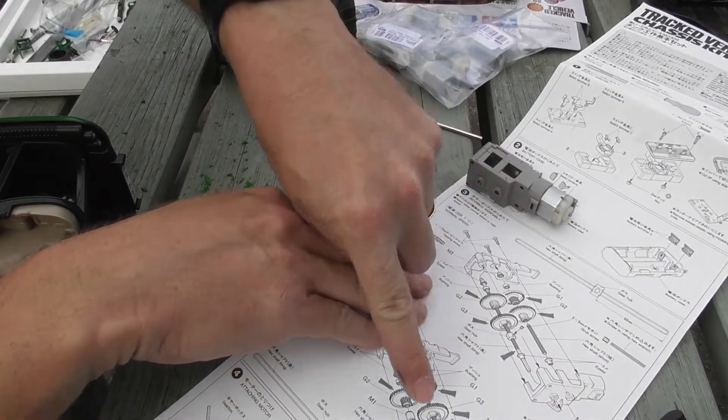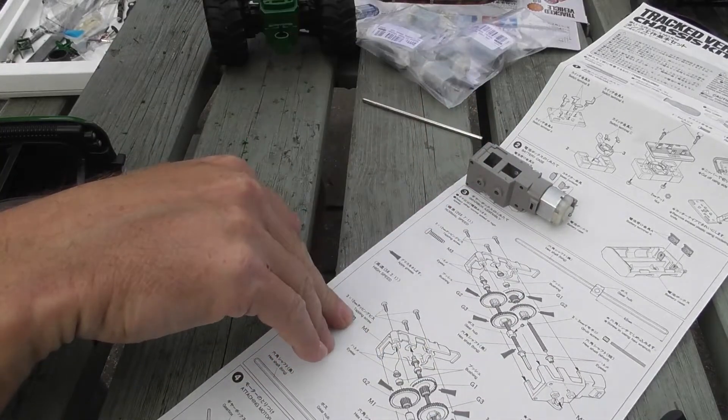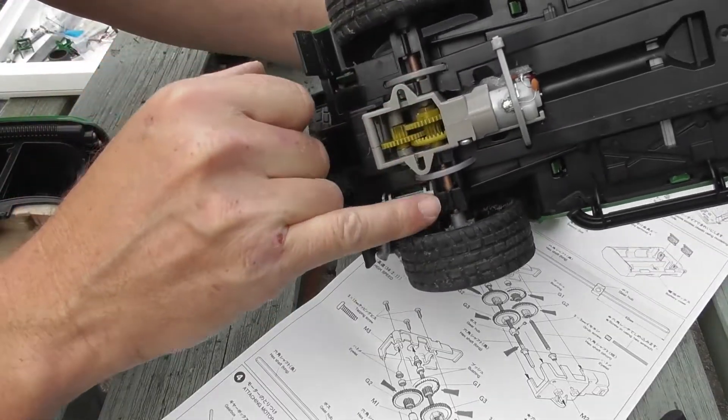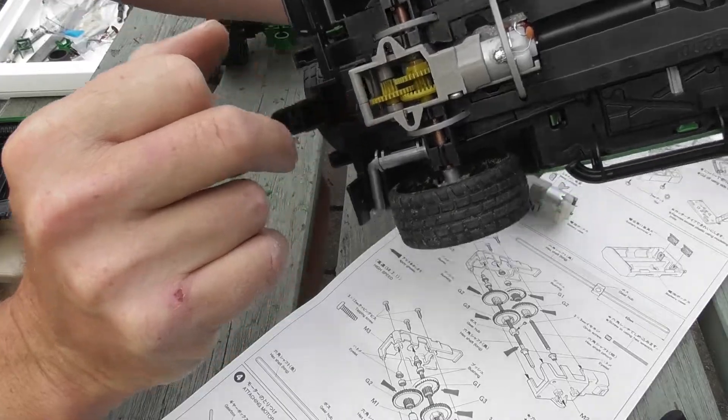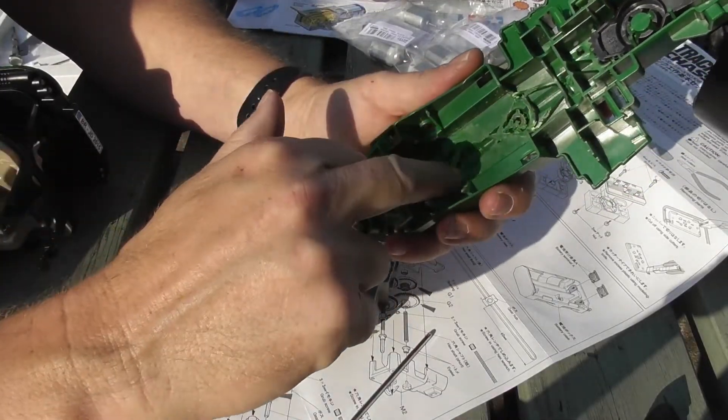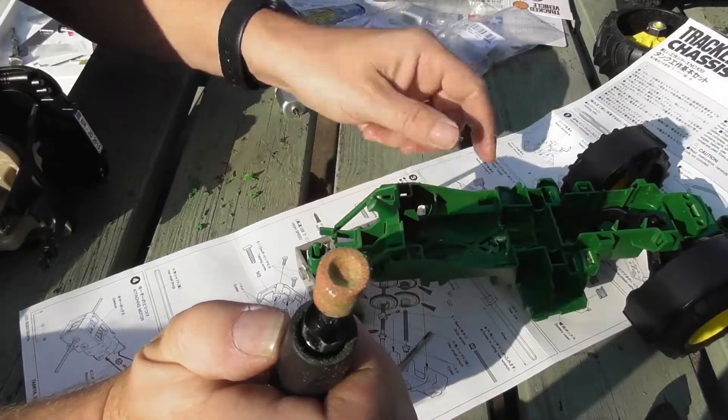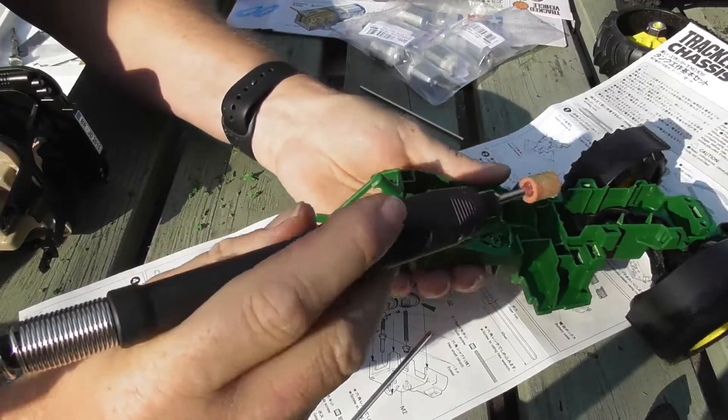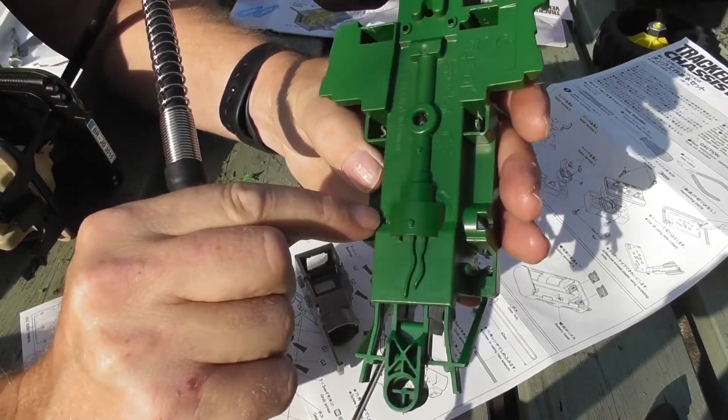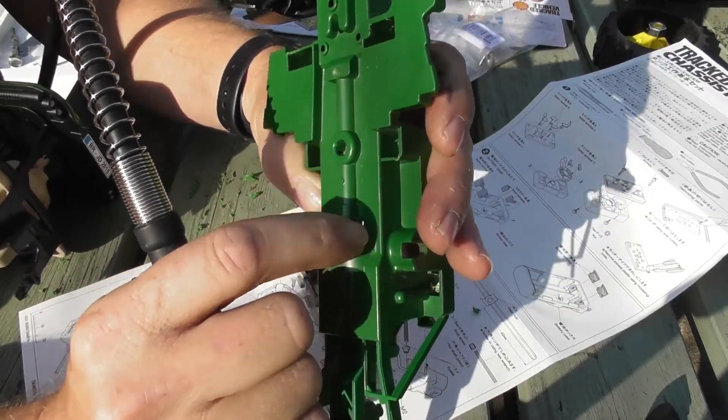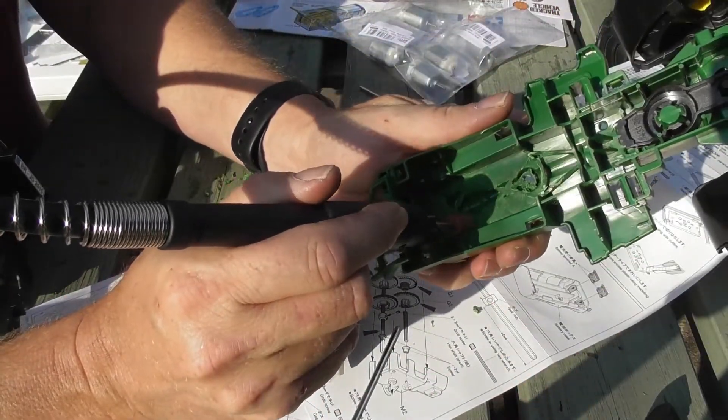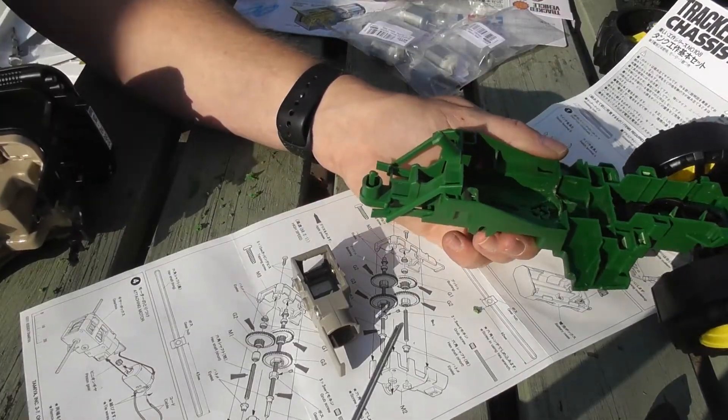Following the first part of the instructions, what you need to do is with the Dremel, you need to shave out a load of this area here. The Dremel stone I used has got a small dimple in the end and that seems to be the best one for this kind of work. You just work all the way around, gliding it out until you're virtually through these bits here. I basically kept going until I could see from the inside that I was through those.